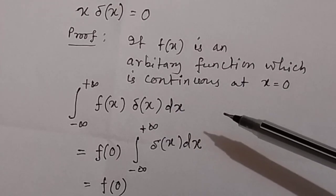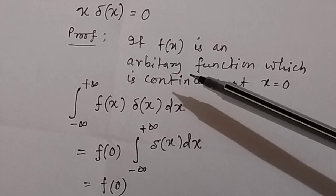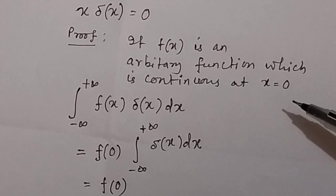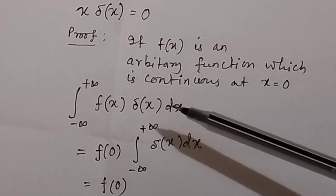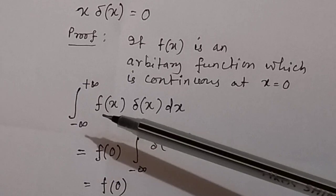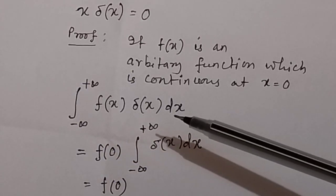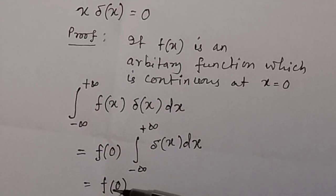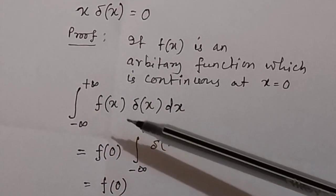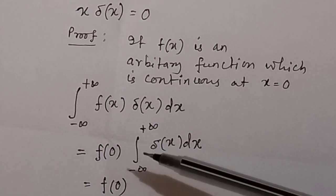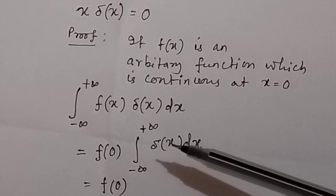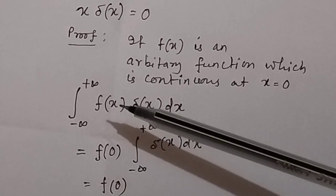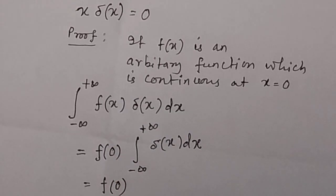In the Dirac delta function, we know that if f(x) is an arbitrary function which is continuous at x = 0, then the integration of f(x)·δ(x) dx from minus infinity to plus infinity will be equal to f(0), because the integral of δ(x) dx from minus infinity to plus infinity is equal to 1. So if you put x = 0, then the function will be equal to f(0).